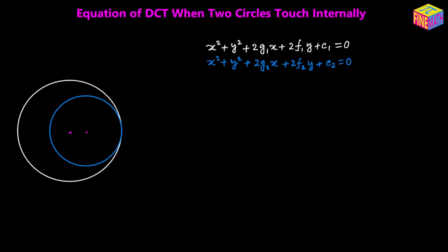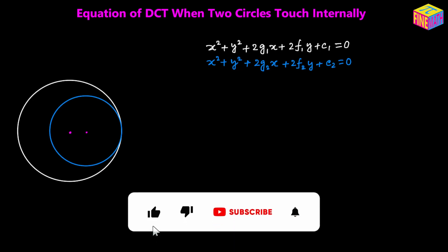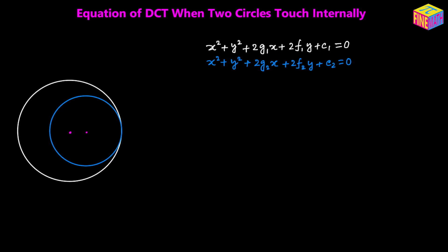Hi everyone. In this video we are going to discuss the common tangent and its equation for two circles that touch each other internally. Let's suppose we have two circles like this whose equations have been provided. For this type of relative position, we are going to have only one common tangent, and that's going to look like this.